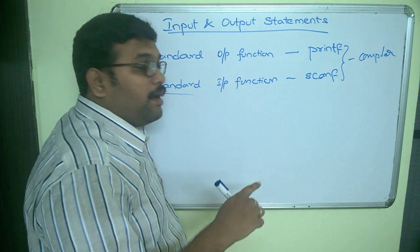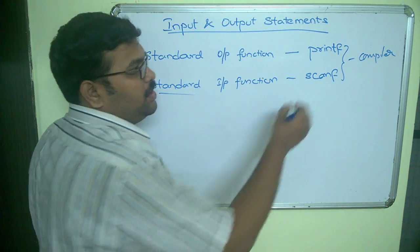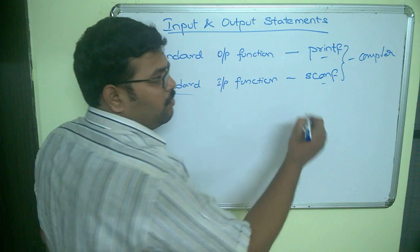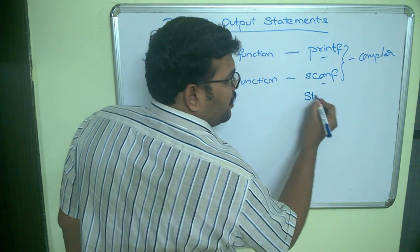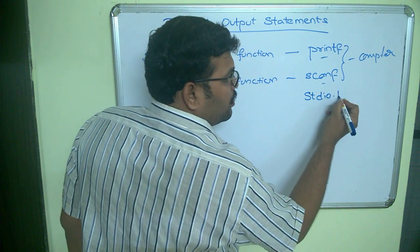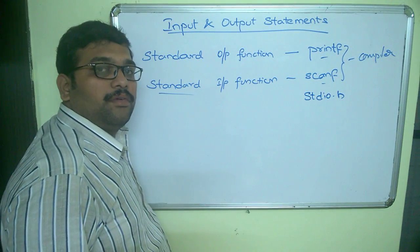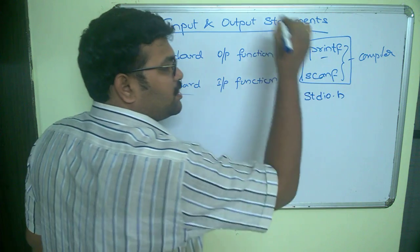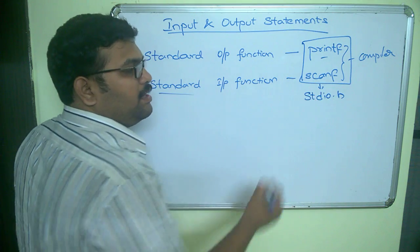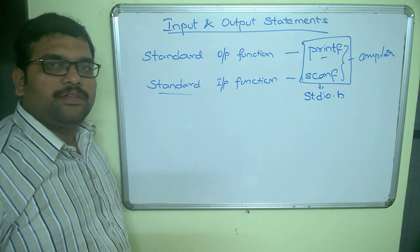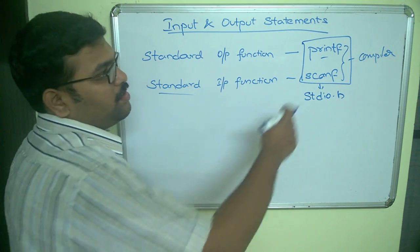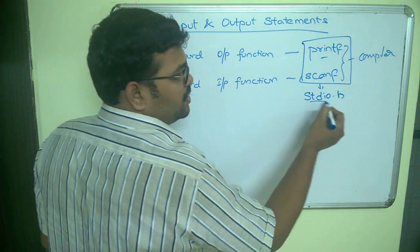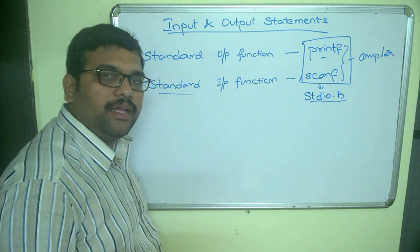While writing the program, if we use these two functions we have to include the standard input and output header file, stdio.h. These two functions are defined in this header file. So if our program consists of these two functions, it is mandatory to include stdio.h.